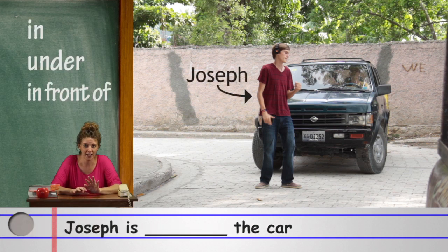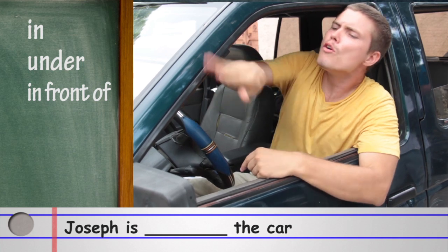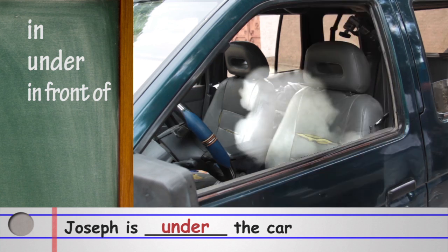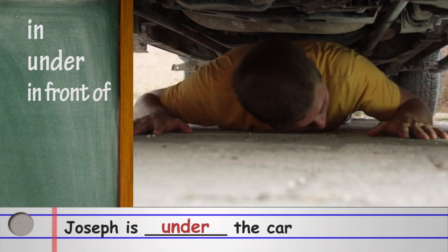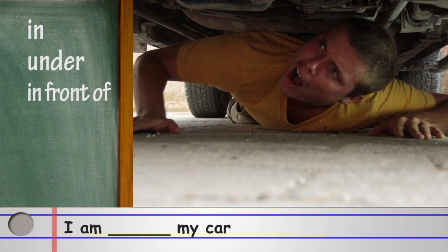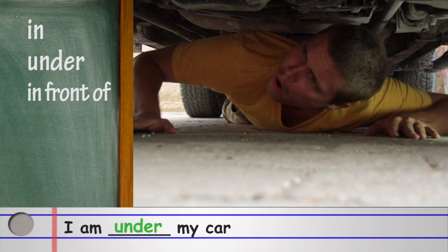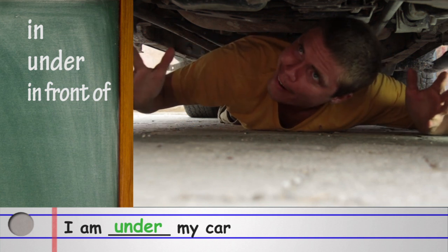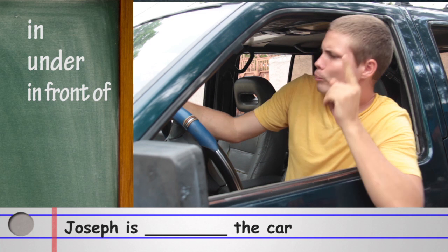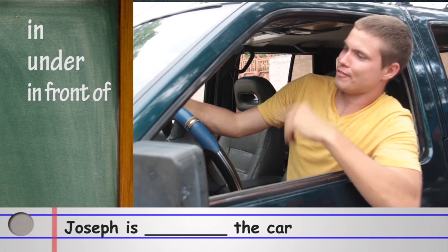Joseph is in the car, under the car. Ossoua is in front of the car. He is under my car. Move away from under my car. Oh, I am under my car. No, he is in front of my car.